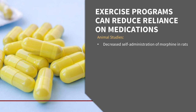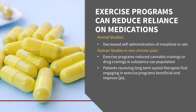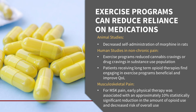We also know that exercise programs can reduce reliance on medications. Animal studies showed decreased self-administration of morphine, and human studies in non-chronic pain showed reduced medication cravings including cannabis use. Long-term opioid therapy studies found that engaging in exercise programs was helpful in reducing cravings and improving quality of life. For musculoskeletal pain, a very large study found that patients who received early physical therapy after surgery reduced their opioid use by 10% and decreased their risk of even starting opioid medication. Exercise is key and better initiated sooner rather than later.